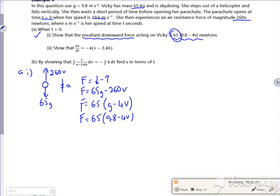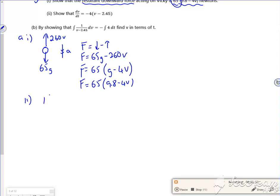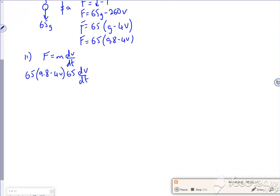So then it says, part two, show that dV by dt is that. Right, so let's do our F is mass times dV by dt. So my force was 65 lots of 9.8 minus 4V. My mass is 65, and then it's dV by dt. So that's quite nice in the fact that my 65's disappeared, so that 9.8 minus 4V is equal to dV by dt. I might just write that out again with the equals in, so we know for sure.